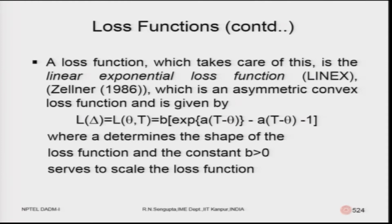After Hall variant, Arnold Zellner took up this work and proposed the LINEX loss function (Zellner 1986), which is an asymmetric convex loss function. It is defined as L(delta) where delta is the difference T minus theta. There are two parameters: A, the shape parameter, and B, the scale parameter. The loss function consists of a linear part and an exponential part, hence the name Linear Exponential loss function.